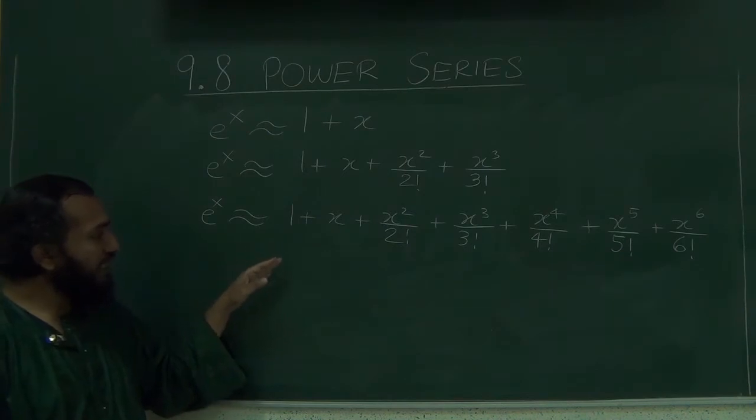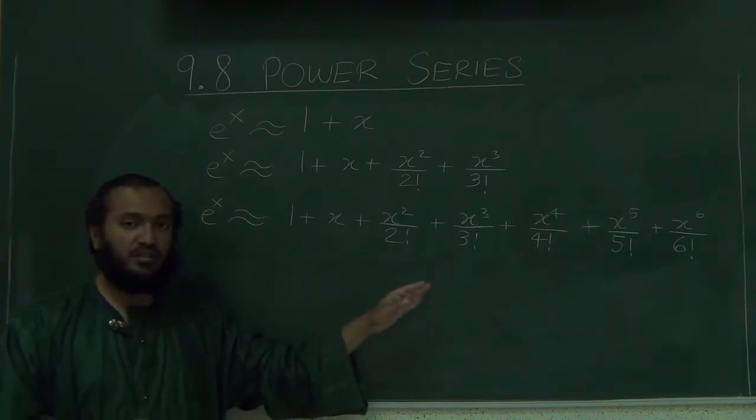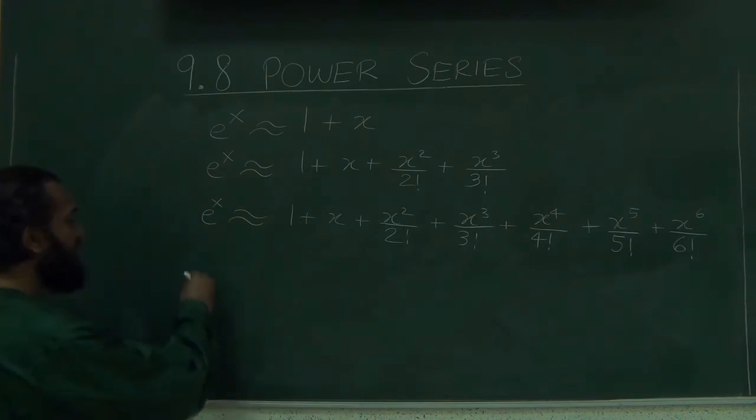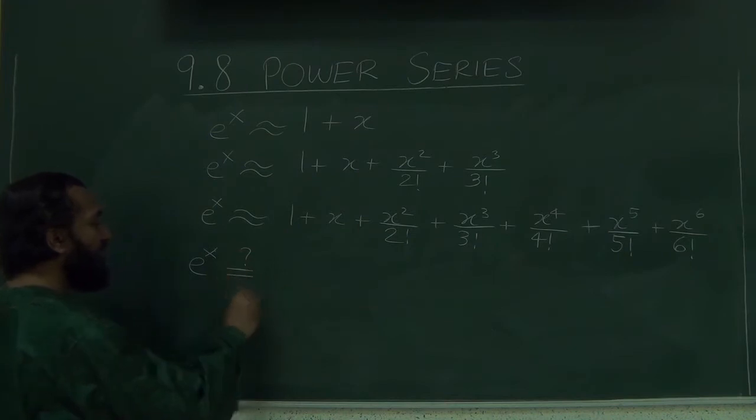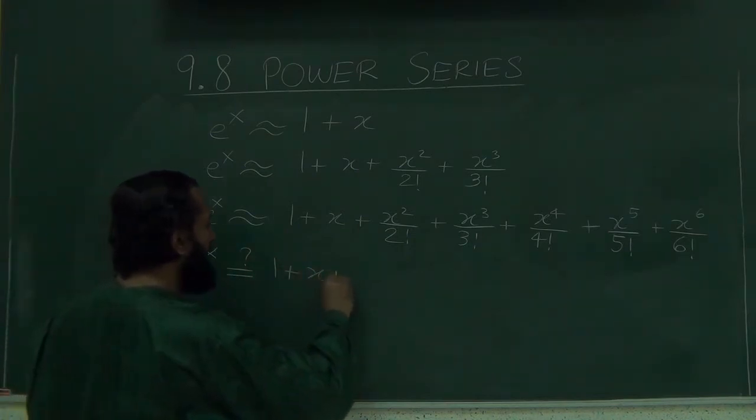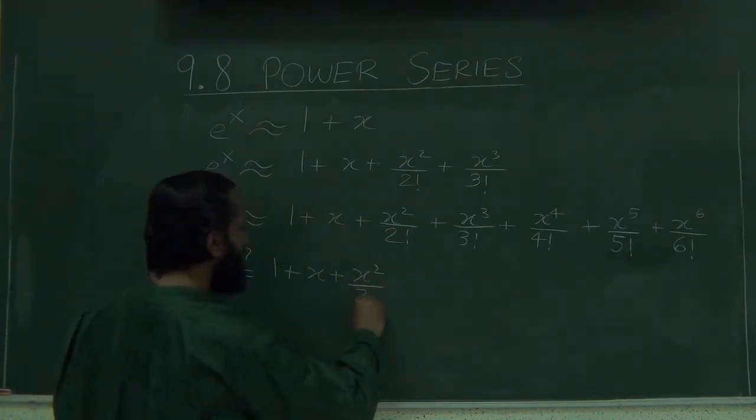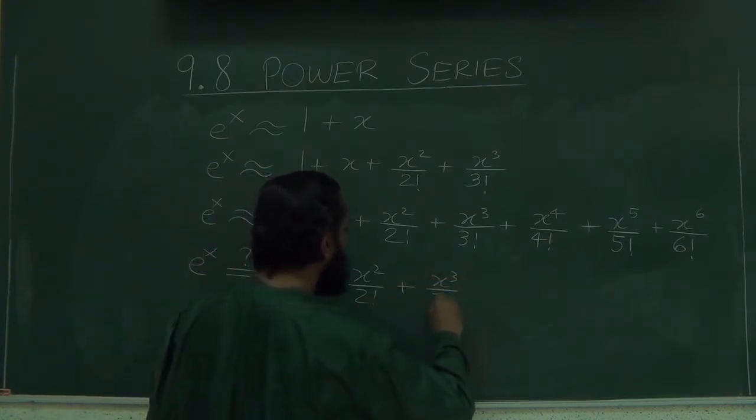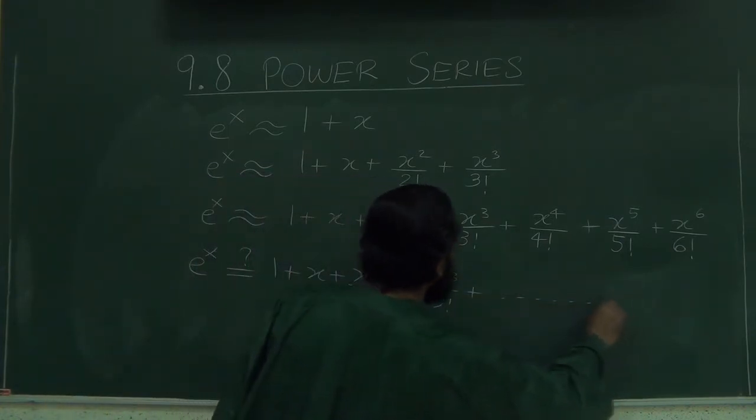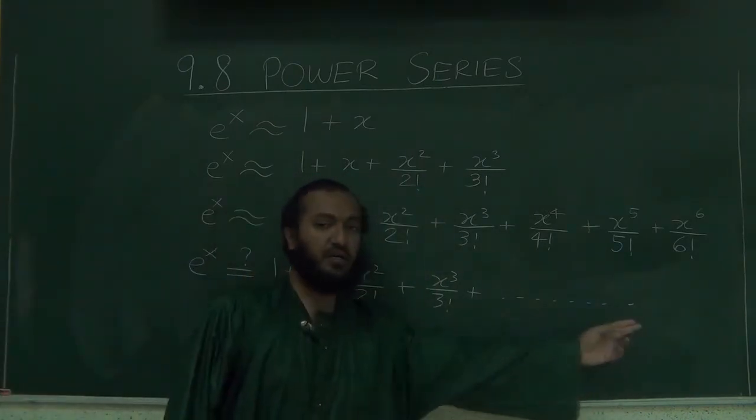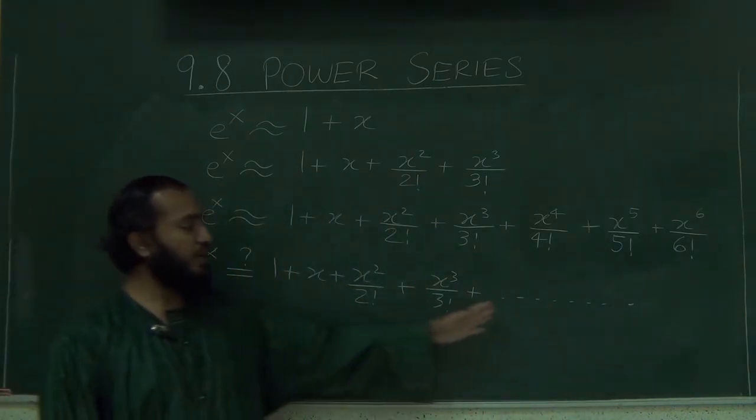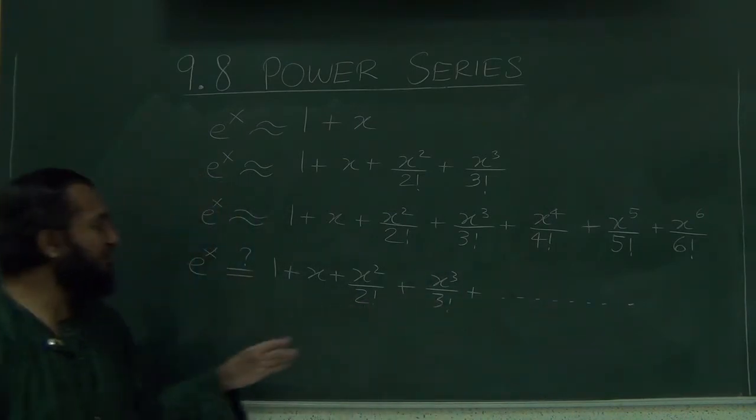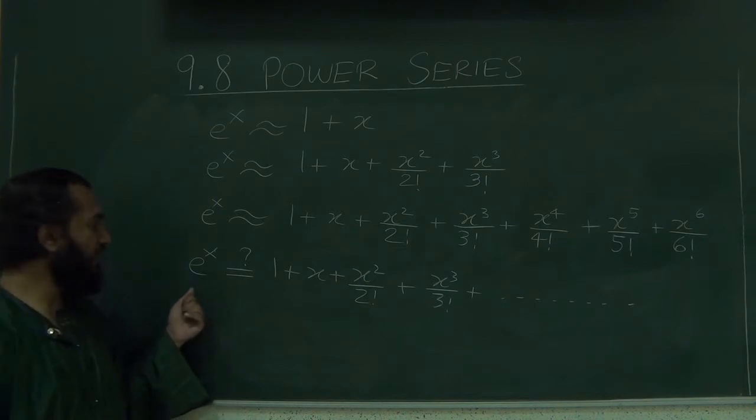But we know that adding more terms is increasing the accuracy. So perhaps it leads us to think that perhaps there may be, if you keep this process going forever, and the dot dot means really forever, don't stop at a finite term, don't stop at 10th degree or 12th degree, but just keep going forever. Perhaps if you do that, then it becomes exactly equal to e to the x. And indeed that is true. We are going to see this a little bit later.